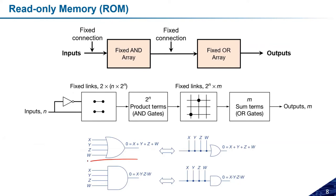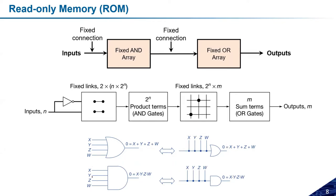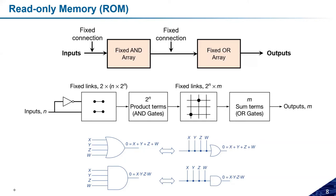One small thing: we have already seen that an OR gate with four inputs can be replaced with a simplified structure, and similarly AND gates can be drawn in simplified form. In the circuit diagrams, a dot indicates a fixed connection and a cross indicates a programmable connection. We will see these conventions later on.